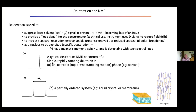A typical deuterium NMR spectrum of a single rapidly rotating deuteron — for example a deuterated lipid in chloroform or D2O — is a single line, because all anisotropic interactions are averaged out by fast isotropic motion, typically faster than milliseconds. But if you have a partially ordered system, such as a liquid crystal or bilayer membrane, you can get two spectral lines. The deuterium is still undergoing fast motion, but now has an orientation with respect to the magnetic field — which is very informative.